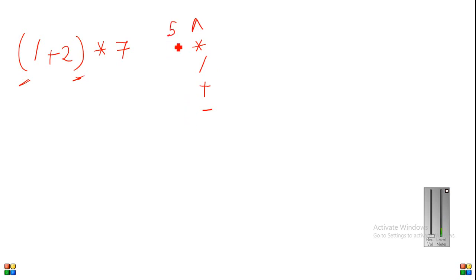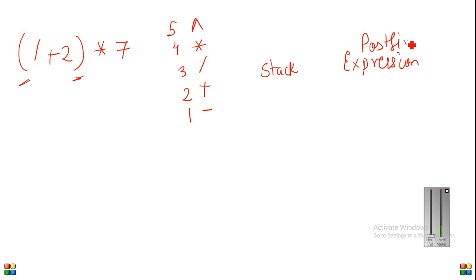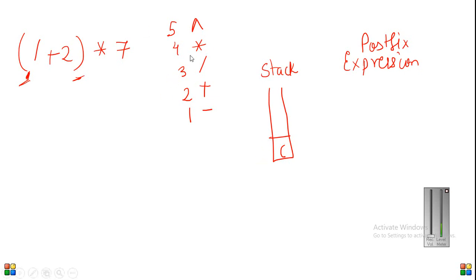The priority order is: five is highest, then four, three, two, and one. We have a stack and an expression which is nothing but a postfix expression — the stack is initially empty. When we encounter braces, since these are not numbers, we put them into the stack as-is. Remember, for brackets there is no priority. So when we encounter one, it goes into the postfix expression, then we encounter plus and directly push it onto the stack.